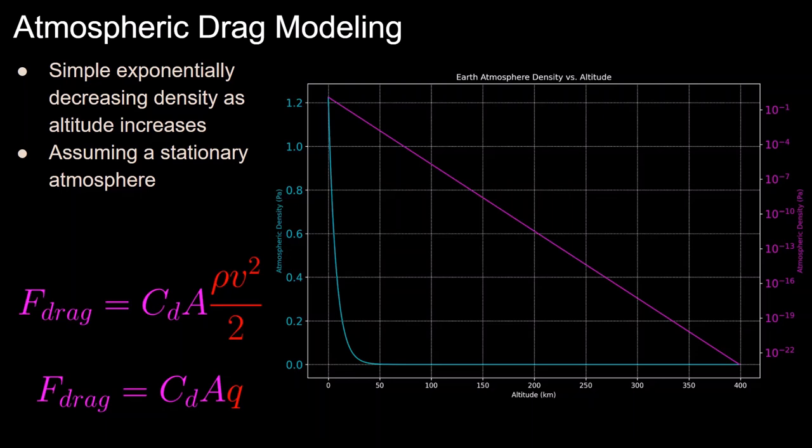To model aerodynamic force, we must first model our atmosphere's density as a function of altitude. Our atmosphere is extremely complex and interesting, but we can get a good first order approximation of its density with a simple exponential function. We can see that on the plot on the right, where the x-axis is altitude from 0 to 400 kilometers, and on the y-axis we have atmospheric density. The blue scale on the left is a linear scale, which as we expect is exponentially decreasing as a function of altitude, and the purple is a log scale, where exponential functions look linear in log scales.